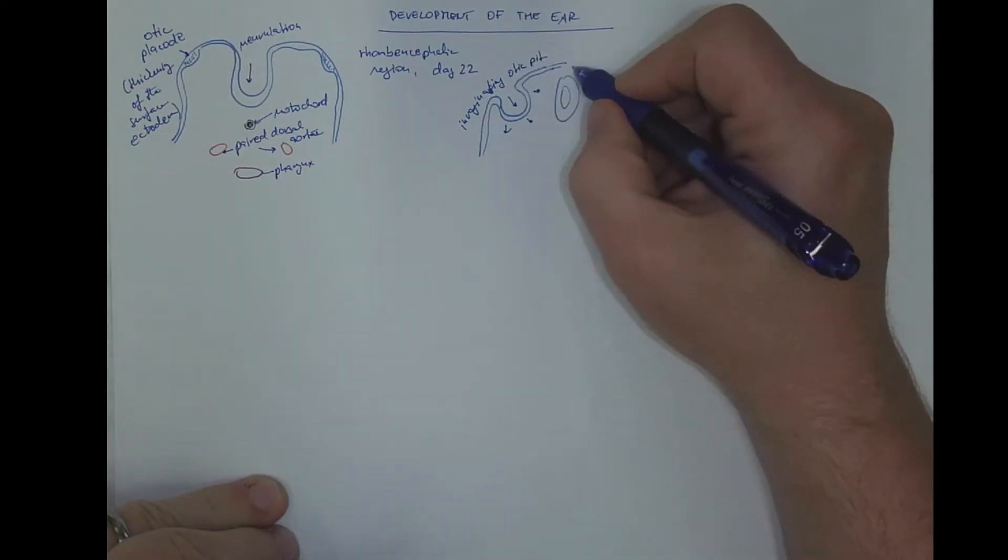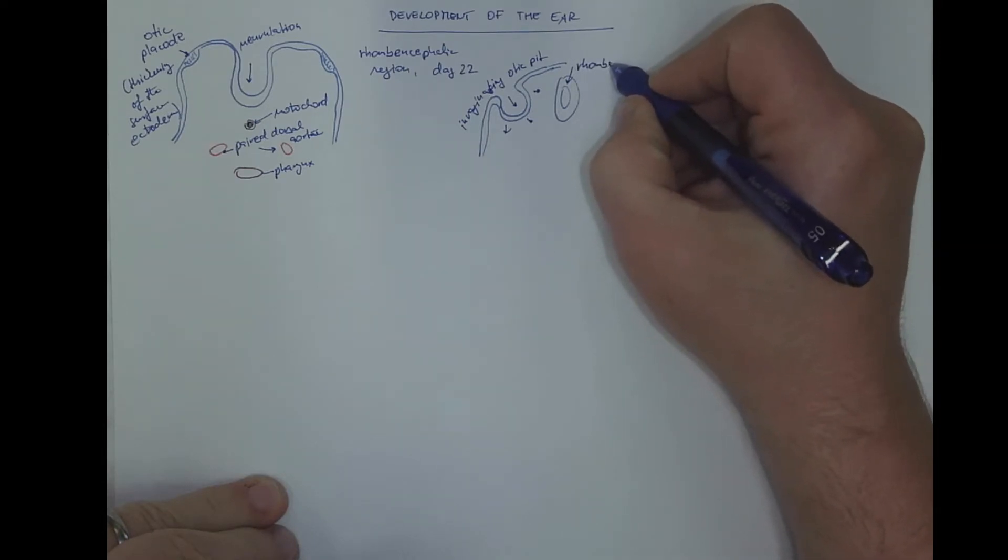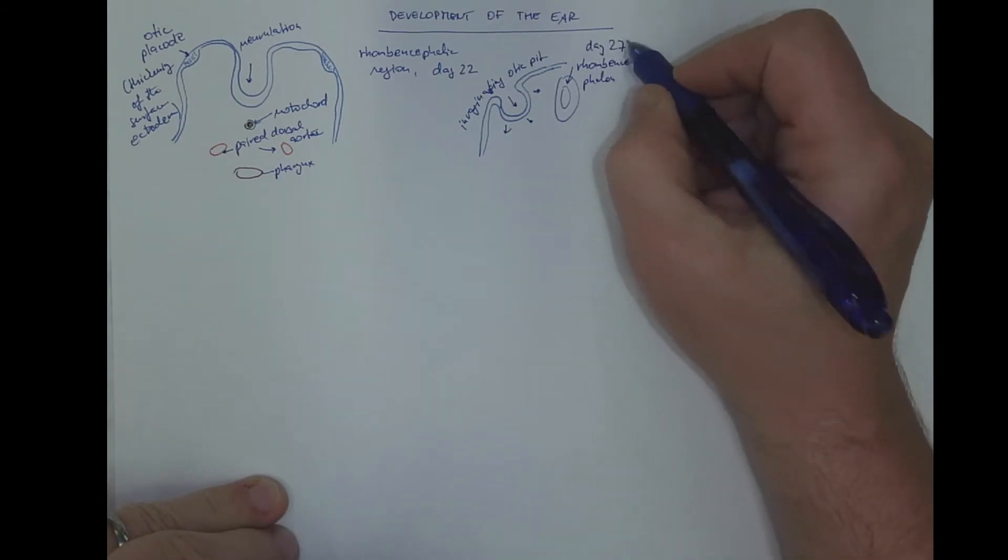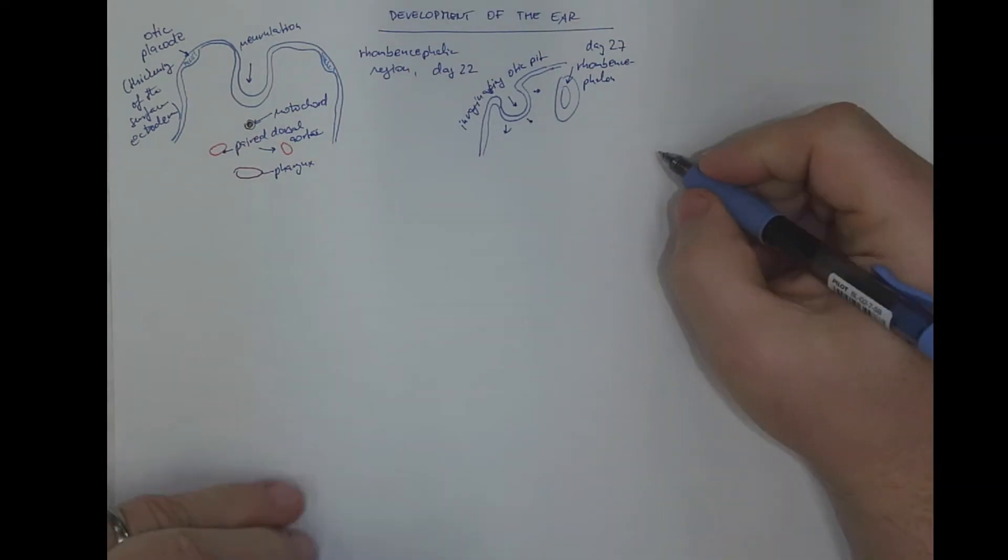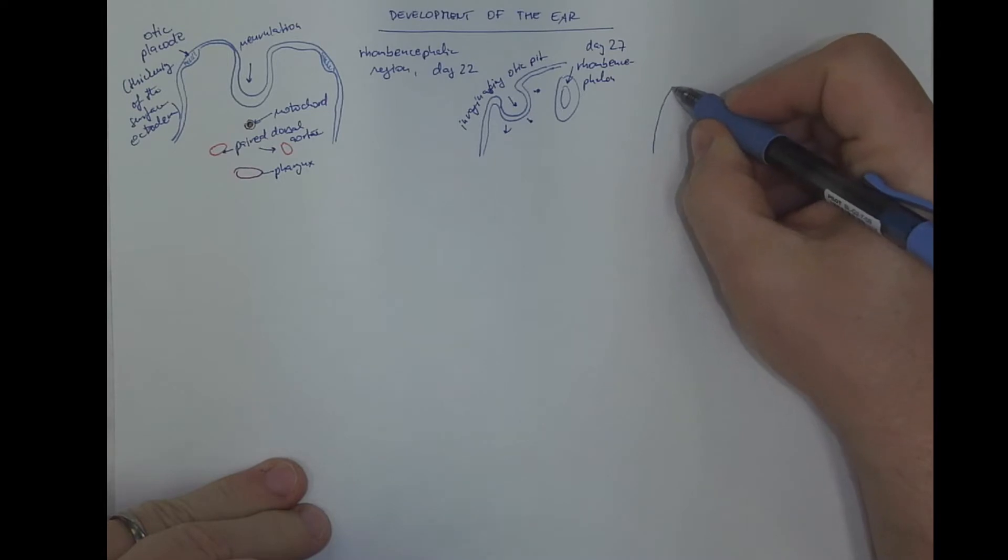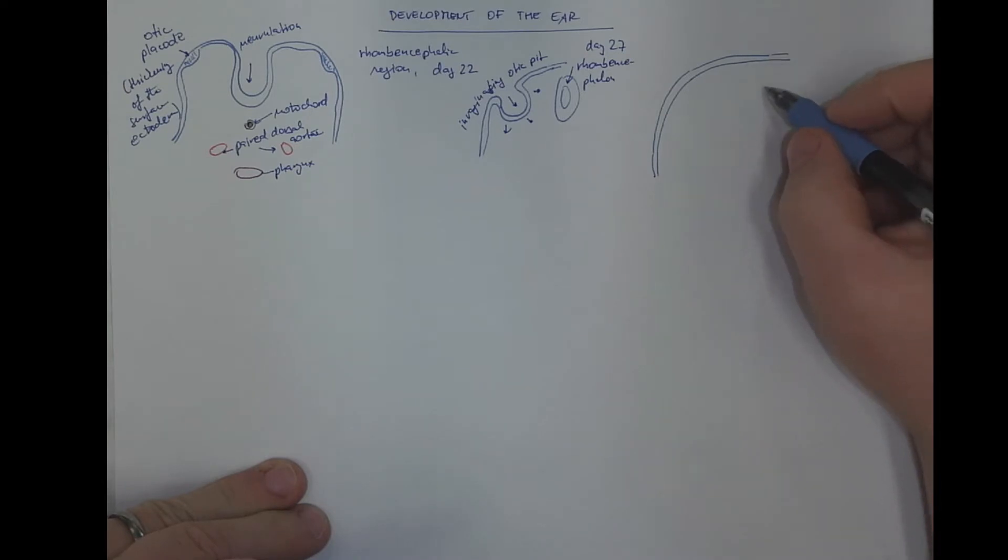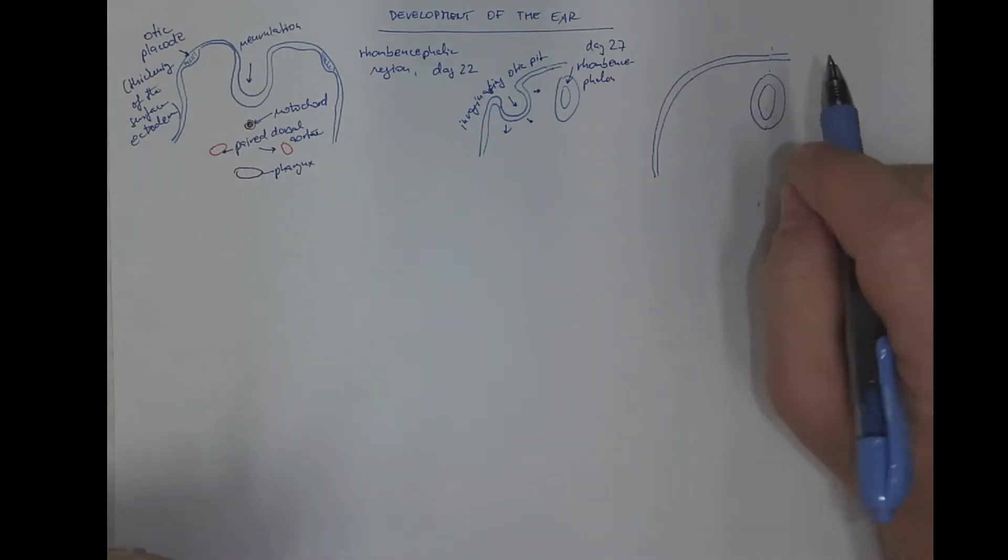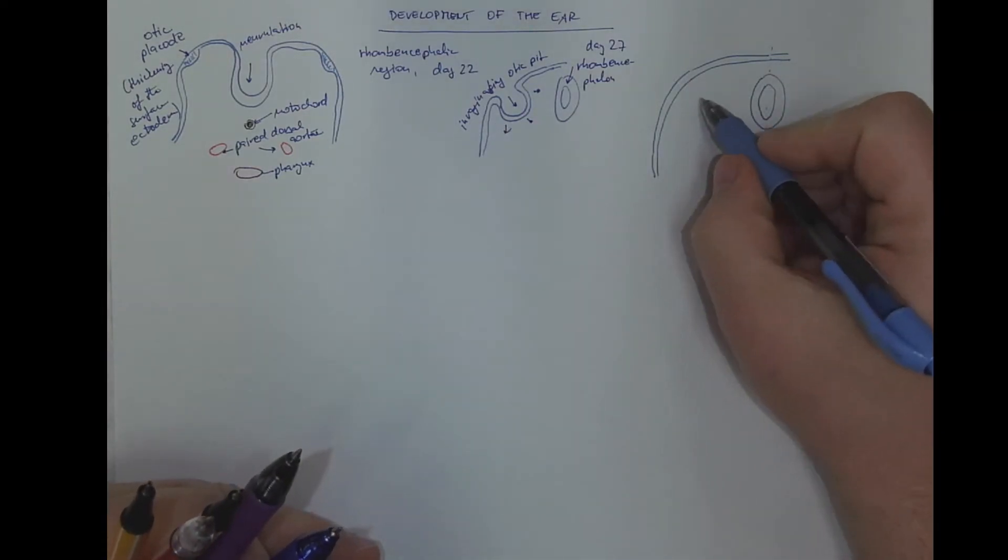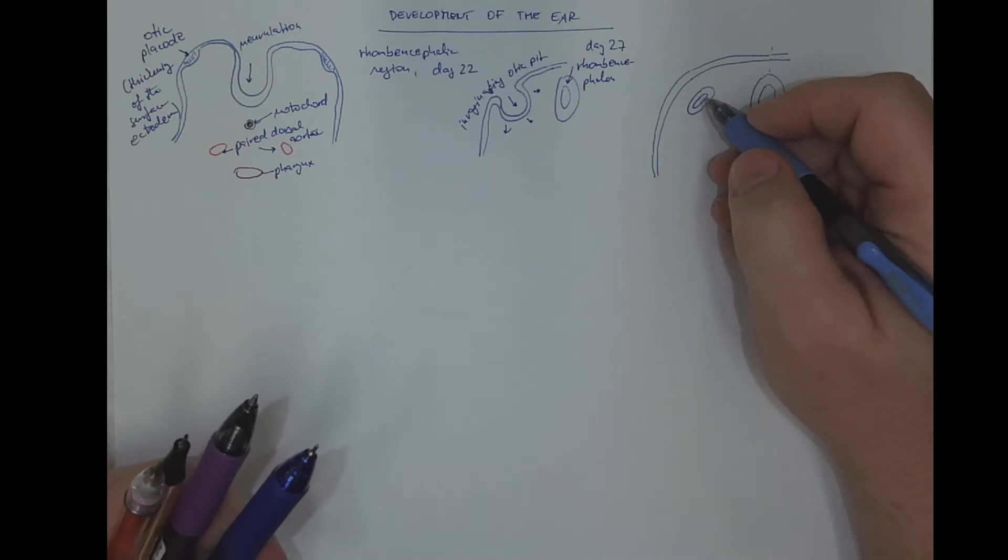This will be the rhombencephalon on day 27. And finally, after completing the invagination, let me again draw only half of the head because the other half will be completely symmetrical. We can see the surface head ectoderm, below there is the rhombencephalon, here is the midline or the median plane, and the completely invaginated vesicle called otic vesicle or otocyst.